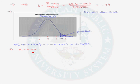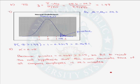The last step is to state our conclusion in English and in context. Because the p-value of 0.0681 is greater than alpha of 0.05, we fail to reject the null hypothesis that the mean commute time of all company employees is 24.3 minutes. Our sample of 40 employees does not yield evidence that their mean commute time is any different than the national mean commute time. We have completed the test of significance.